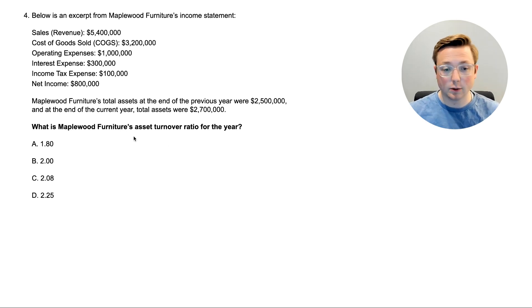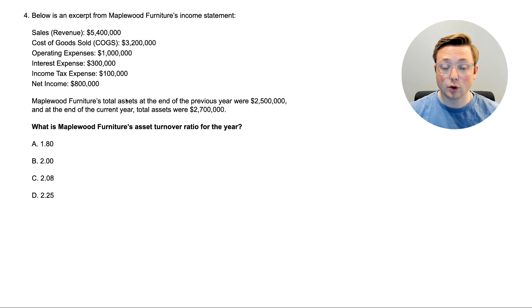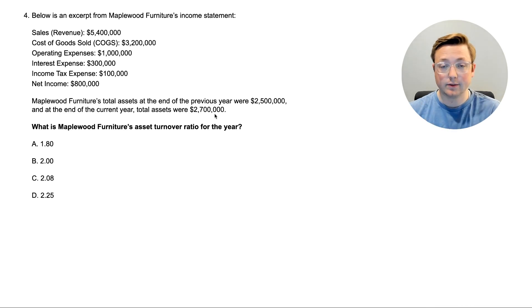Here we are at question four. Read the last part first: what is Maplewood Furniture's asset turnover ratio for the year? The income statement shows revenue $5,400,000, COGS $3,200,000, operating expenses $1,000,000, interest expense $300,000, income tax $100,000, net income $800,000. Additionally, total assets at the end of the previous year were $2,500,000, and at the end of the current year $2,700,000. What is the asset turnover ratio?